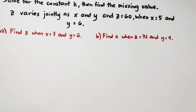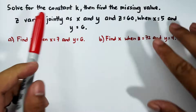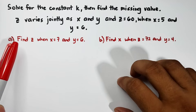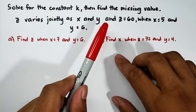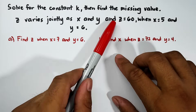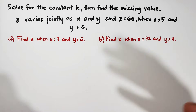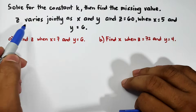Now let's put some practice on different examples of joint variation. The direction is: solve for the constant k, then find the missing value. Here's the given statement — we have a single statement, then we will solve a and b. Z varies jointly as x and y, and z is equal to 60 when x is equal to 5 and y is equal to 6. A lot of students are confused when they encounter this kind of statement. I will remind you to chop-chop the problem — first, z varies jointly as x and y.